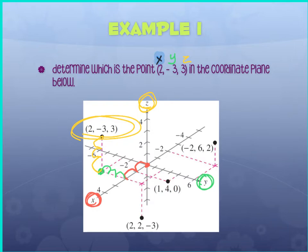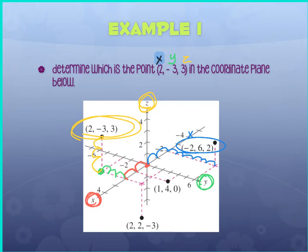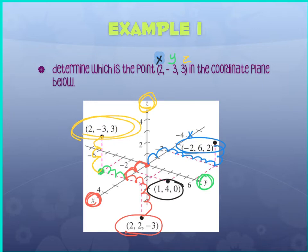You can work two ways: given the graph, find the coordinates, or given the coordinates, find the graph. For (−2, 6, 2): x is negative 2 so you went back, 6 is the y so you went right six, and z is 2 so you went up two. For (2, 2, −3): forward on x, right on y, and down on z. For (1, 4, 0): right on x, forward four on y, and no movement up or down — it lies on the flat plane.